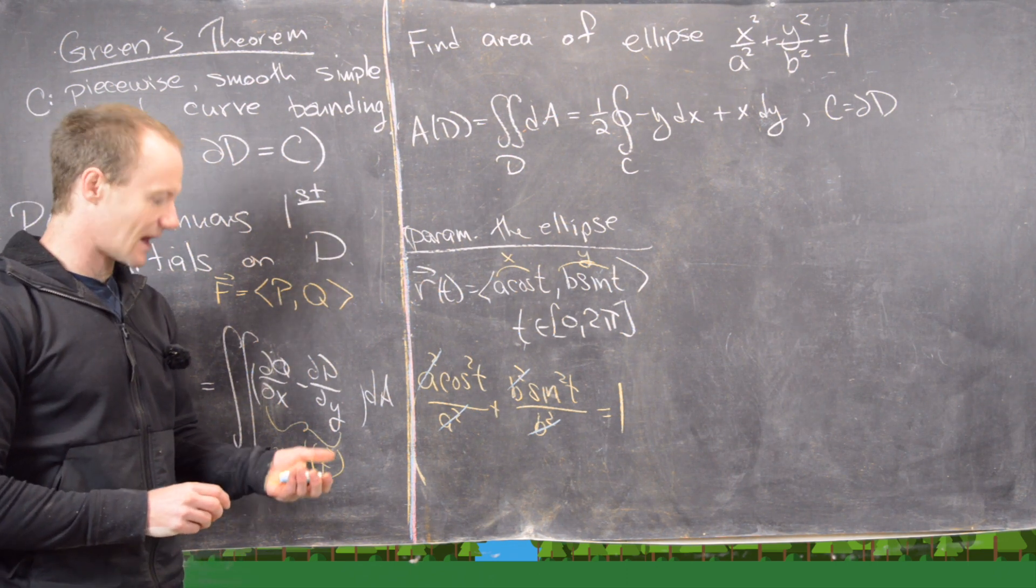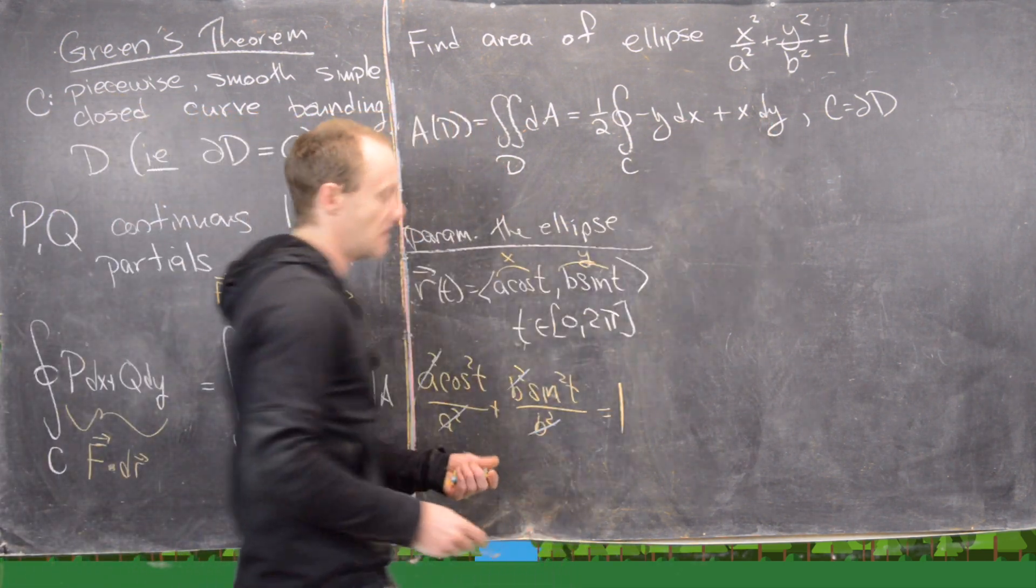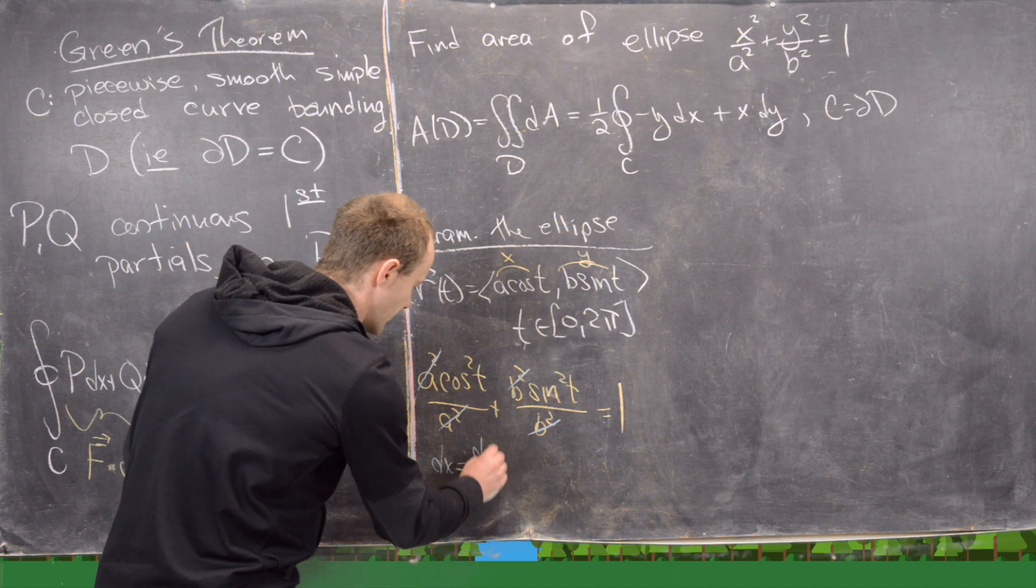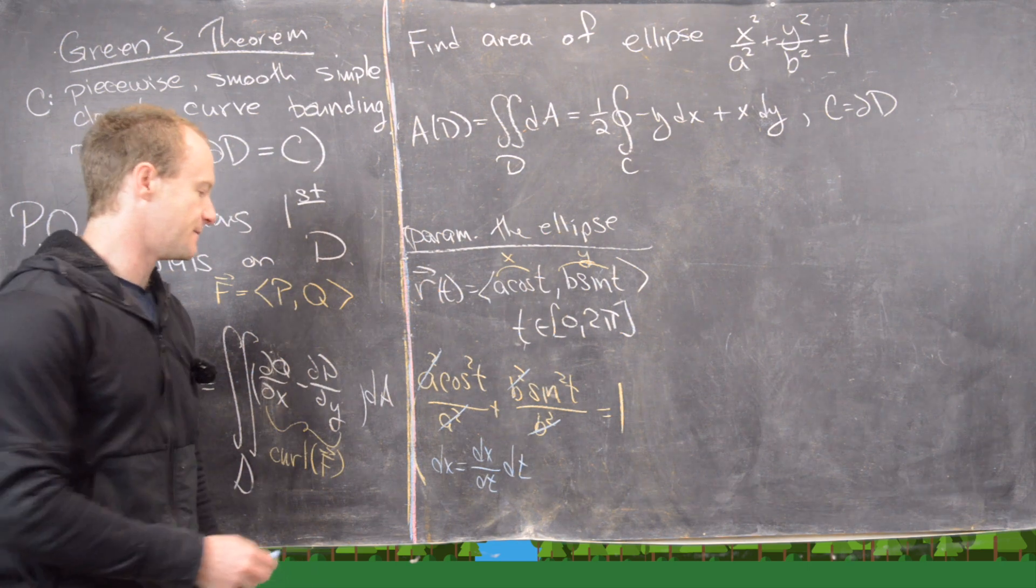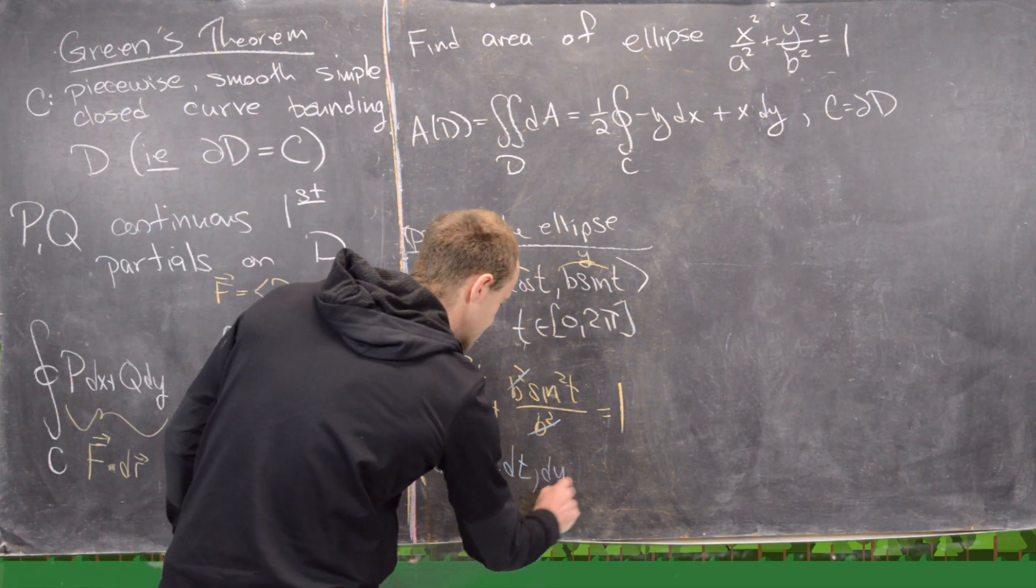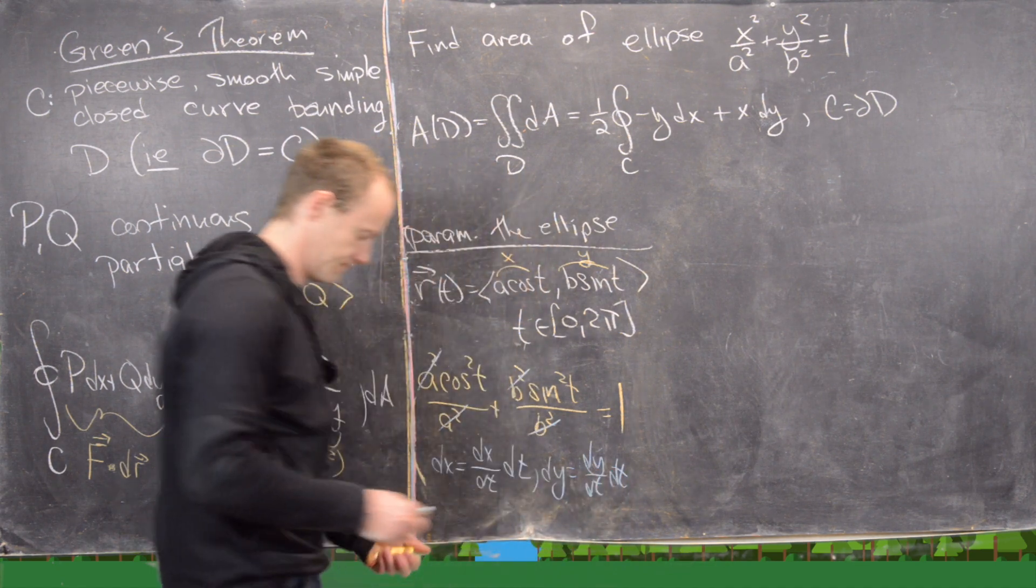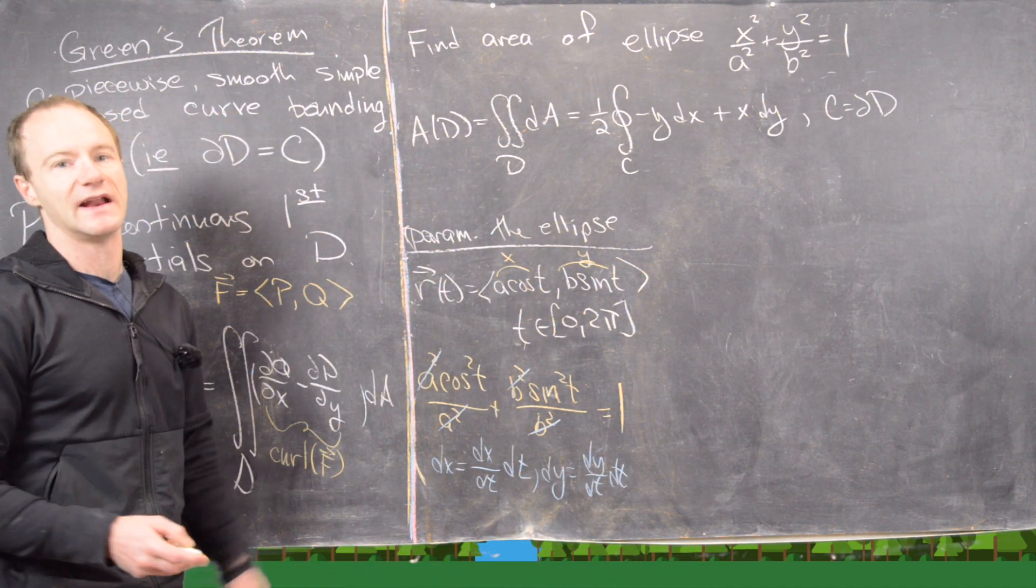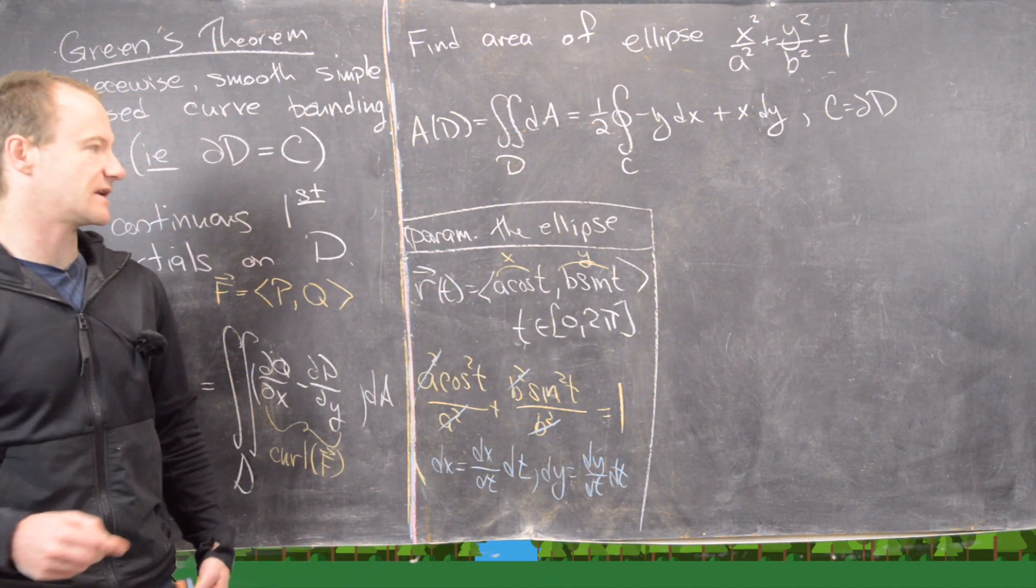The next thing I want to notice is that these portions of the line integral, dx and dy, can be written using the following rule. So dx is dx/dt dt, and likewise dy is dy/dt dt. Just recall that from when we were calculating line integrals for their own sake. Now we're ready to calculate this.